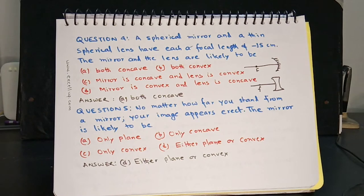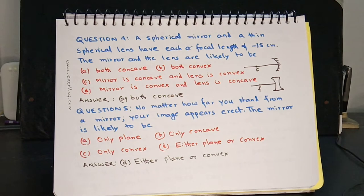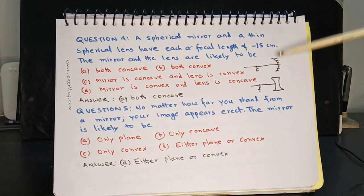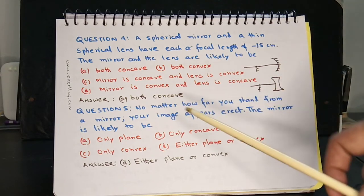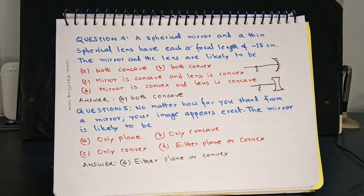The focal length is negative. For a concave lens, focal length is taken from the left side of the lens so it is negative. For a concave mirror, the focal length is always on the left side of the mirror, hence minus 15 centimeters. Had it been a convex mirror, F would be on the right side of the mirror.